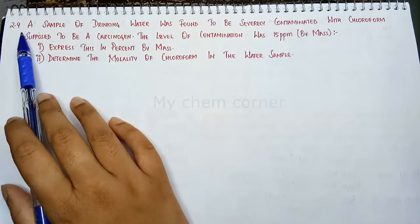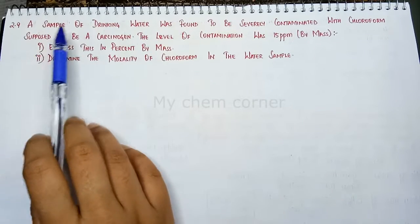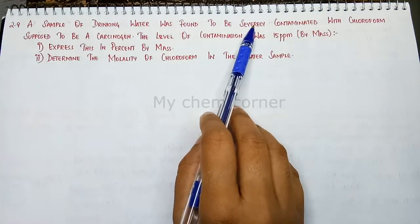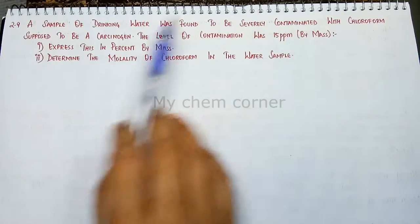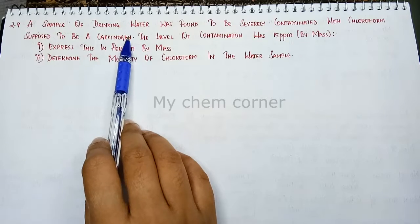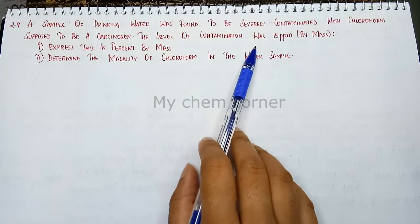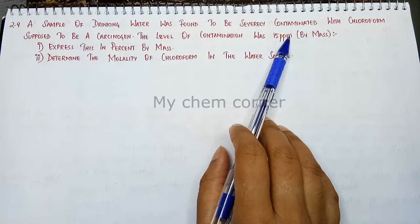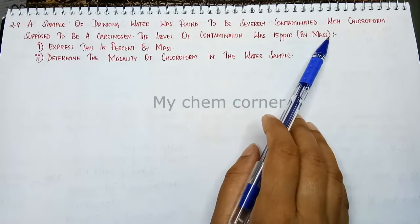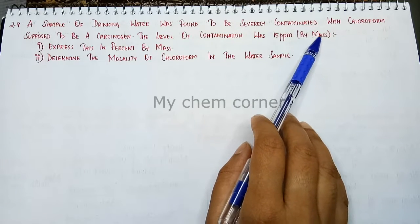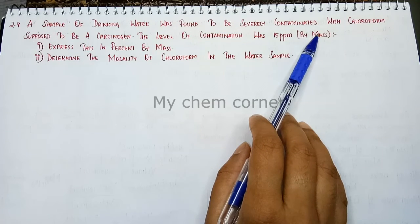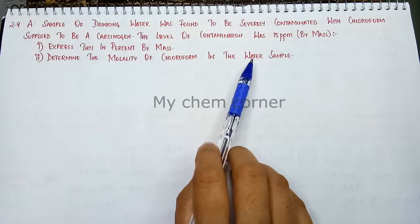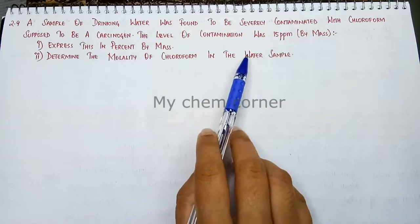Next is question 2.9. A sample of drinking water was found to be severely contaminated with chloroform, supposed to be a carcinogen. The level of contamination was 15 ppm — meaning parts per million by mass. Two questions are given: express this in percentage by mass, and determine the molality of chloroform in the water sample.